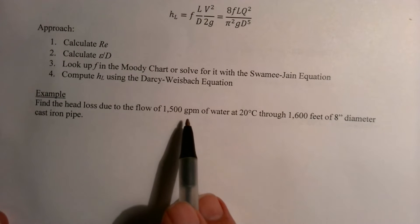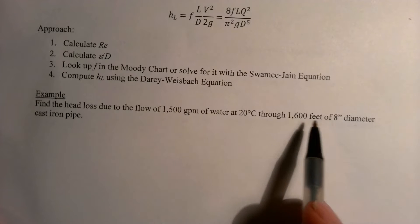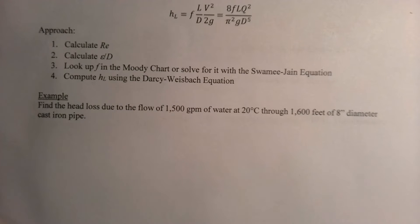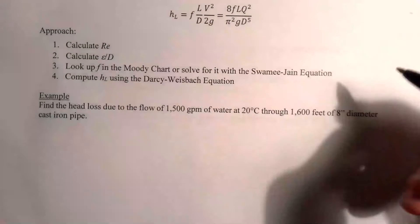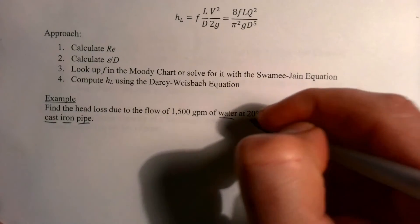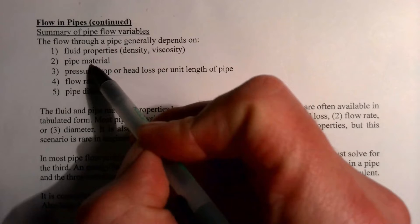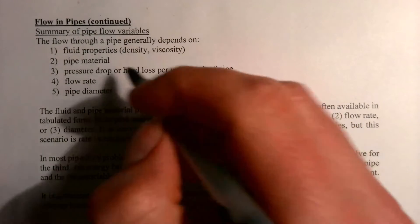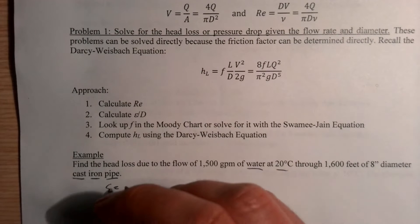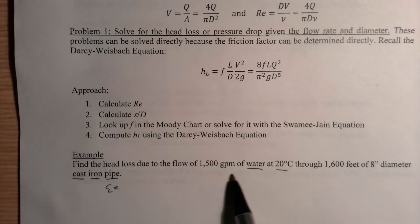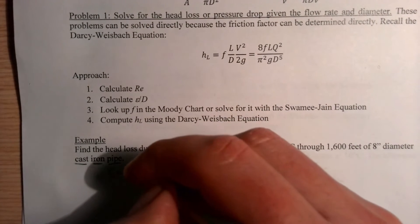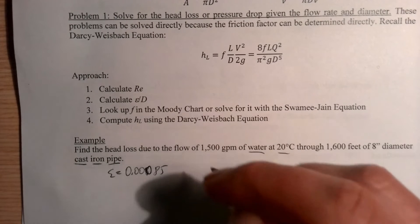Find the head loss due to a flow of 1,500 gallons per minute of water at 20°C through 1,600 feet of 8-inch diameter cast iron pipe. We need fluid properties and pipe material. For cast iron, the roughness height is 0.00085 feet. The flow rate Q is 1,500 GPM, pipe length is 1,600 feet, diameter is 8 inches, and kinematic viscosity of water at 20°C is 1.08 × 10⁻⁵ ft²/s.